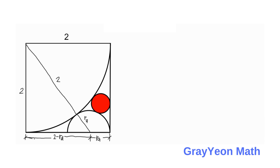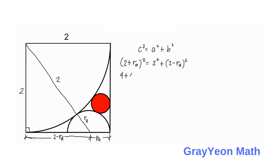This forms a right triangle, so we can apply the Pythagorean theorem: C squared equals A squared plus B squared. The hypotenuse is 2 plus R sub A, one side is 2, and the other side is 2 minus R sub A. Expanding: (2 + R_A)² = 2² + (2 - R_A)², which gives 4 + 4·R_A + R_A² = 4 + 4 - 4·R_A + R_A². The 4s and R_A² terms cancel out.